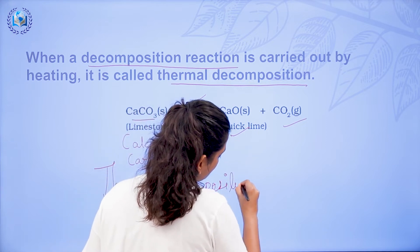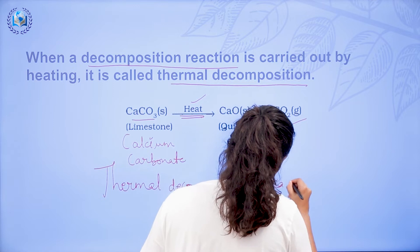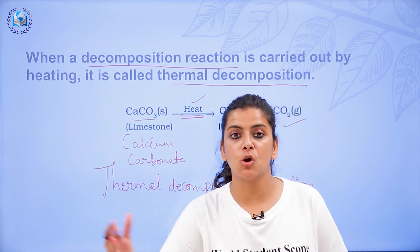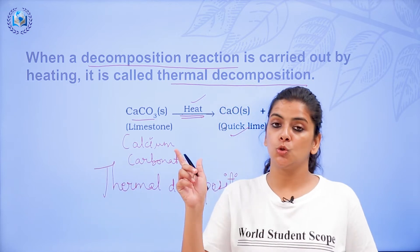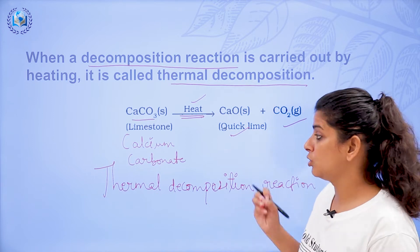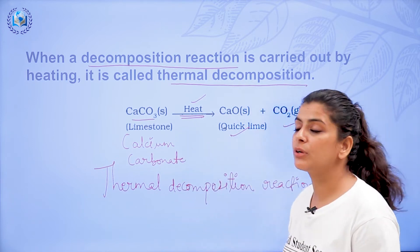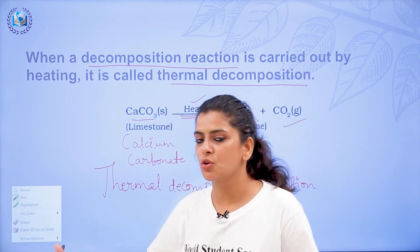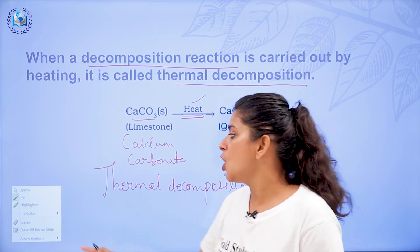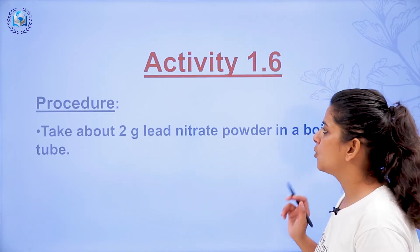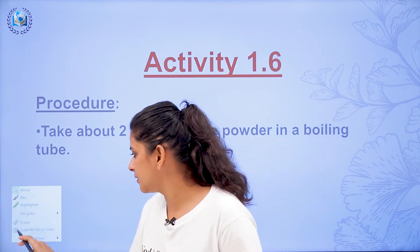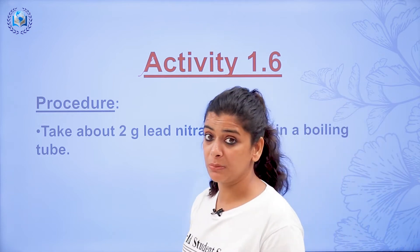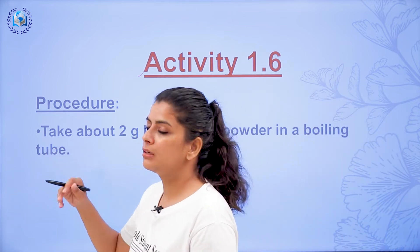Thermal decomposition reaction — this is clear. Exam questions will ask for examples; they may say 'give an example of a thermal decomposition reaction,' so you have to write down this reaction. Or they will give you a reaction and ask which type it is — combination or decomposition. Now we have another activity, Activity 1.6 from your NCERT, which is related to a similar type of reaction. The procedure: take about 2 grams of lead nitrate powder in a boiling tube.